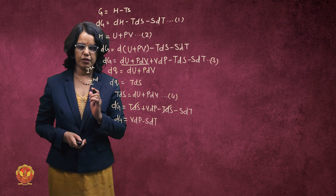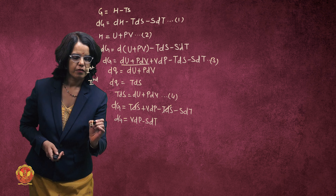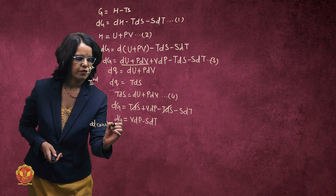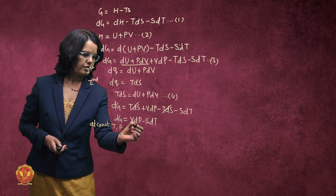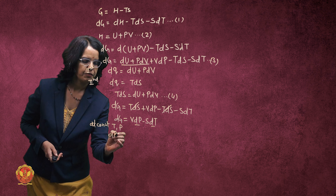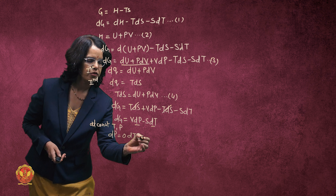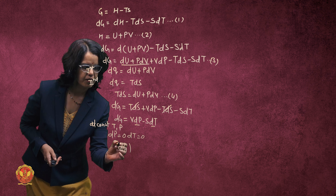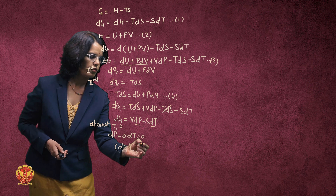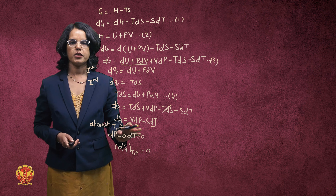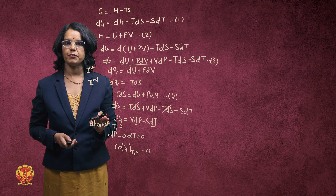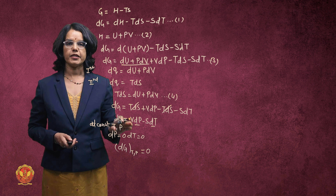Now, P and T being constant means dP and dT are zero. So at constant temperature and pressure, both terms vanish. Therefore, in the reversible condition at constant temperature and pressure, the value of dG is zero.